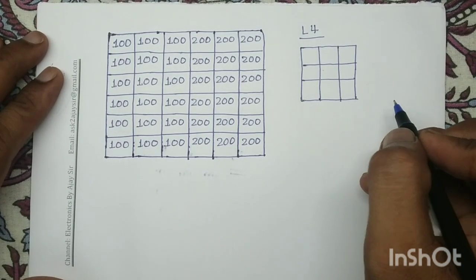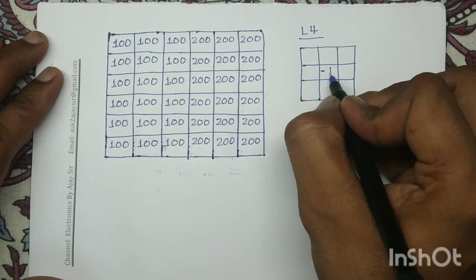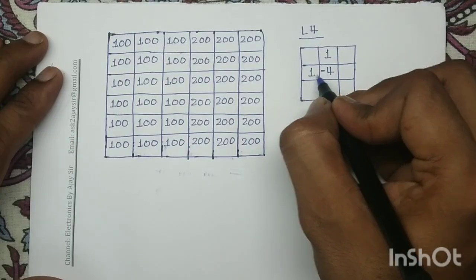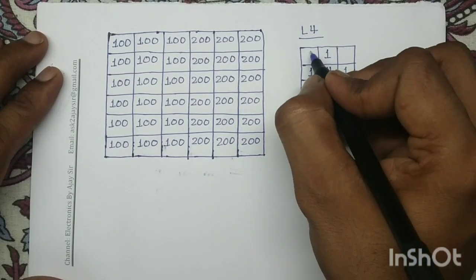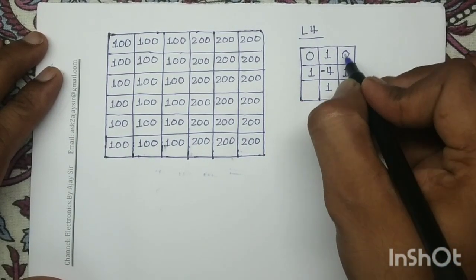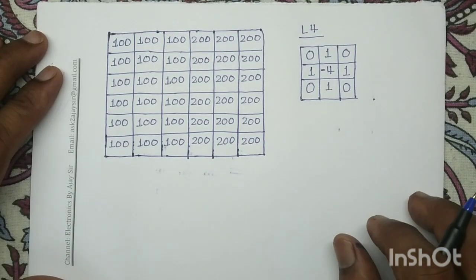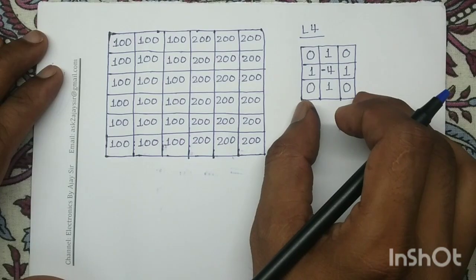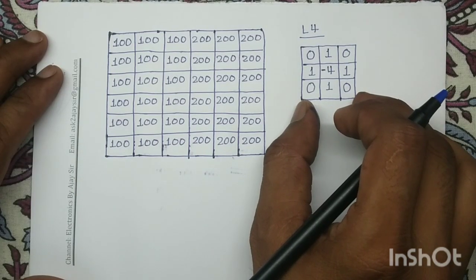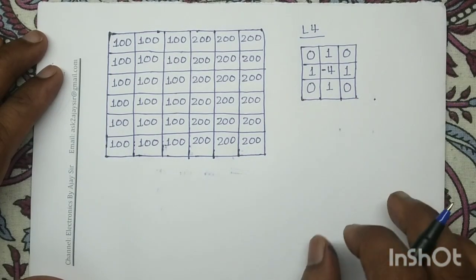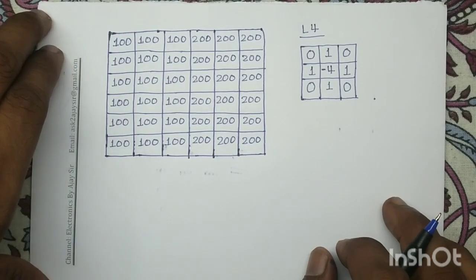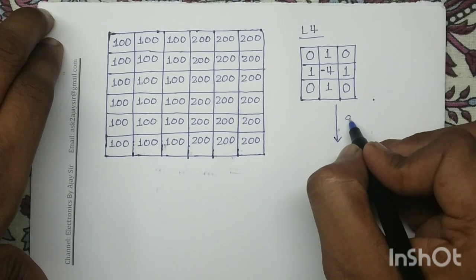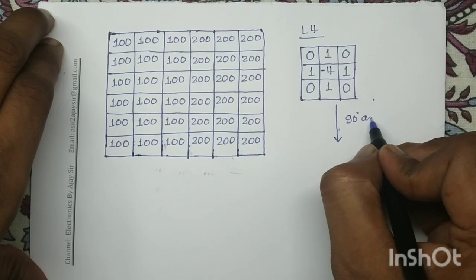In the Laplacian L4 kernel, the center coefficient is minus 4, the 4 neighborhood pixels have the coefficient 1, and all remaining positions have the coefficient 0. In order to perform the convolution operation, we have to rotate this L4 mask by 180 degrees in the anticlockwise direction. We will perform this 180-degree anticlockwise rotation in two intermediate steps. In the first step, we will rotate this mask by 90 degrees in the anticlockwise direction.